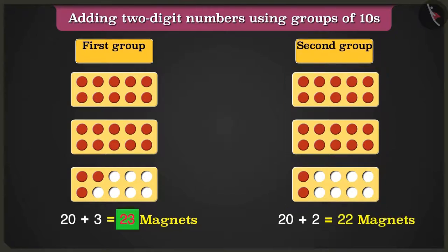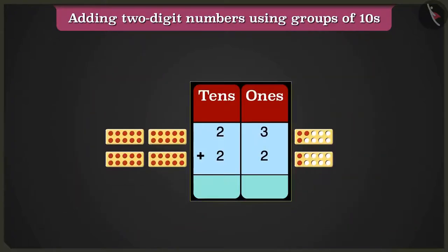Now, to add the numbers 23 and 22, we have to write them in the table of tens and ones. In the box of ones, we will add the numbers 3 and 2. 3 ones plus 2 ones will equal 5 ones.